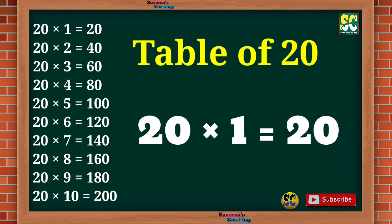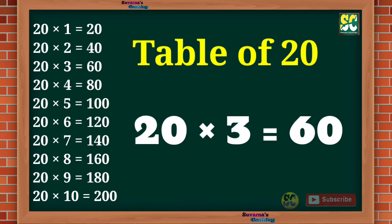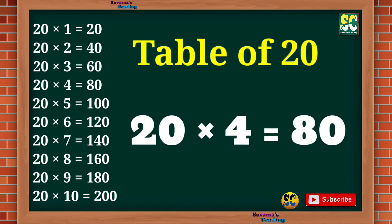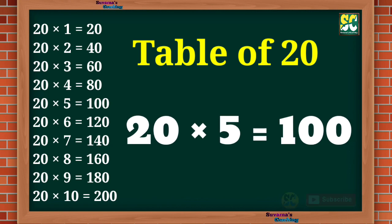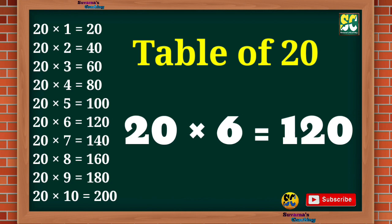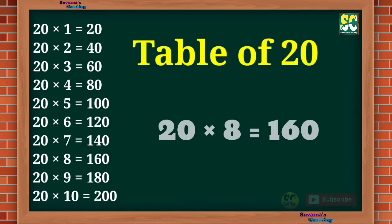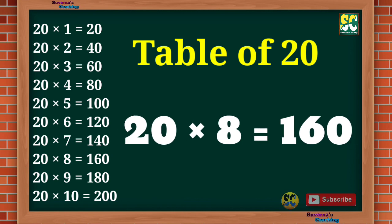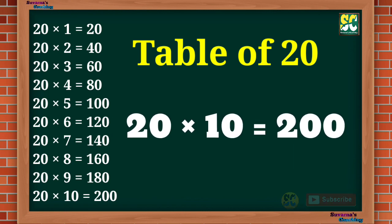Table of 20. 20 1s are 20, 20 2s are 40, 20 3s are 60, 20 4s are 80, 20 5s are 100, 20 6s are 120, 20 7s are 140, 20 8s are 160, 20 9s are 180, 20 10s are 200.